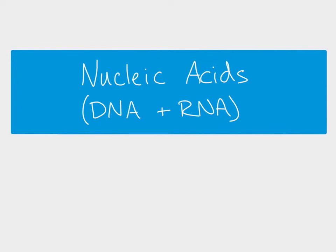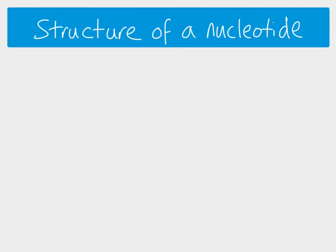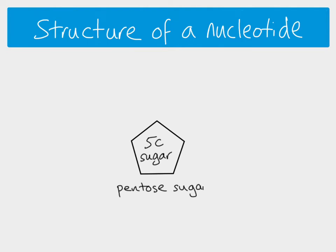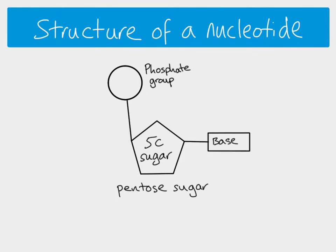Hi everybody. This video is looking at the structure of nucleic acids, so the structure of DNA and RNA. Nucleic acids are polymers made up of nucleotides, so the nucleotide is the monomer. In a nucleotide we've got three different parts: a 5-carbon sugar, which we call a pentose sugar because 'pent' meaning 5. The 5-carbon sugar is attached to a phosphate group, and it's also attached to a nitrogenous base.